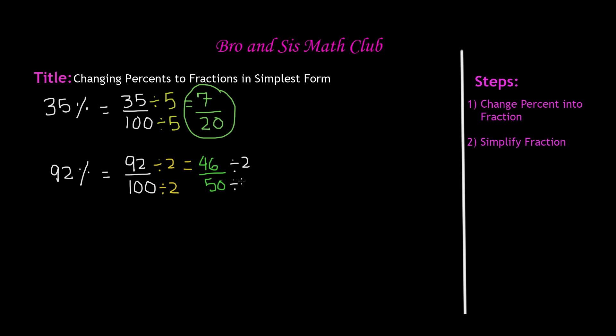So if you divide 46 by 2 and 50 by 2, we know that 46 divided by 2 is equal to 23 over 50 divided by 2, which is equal to 25.